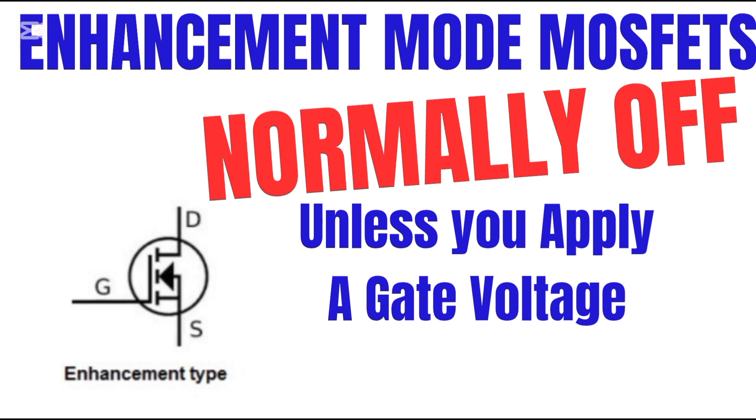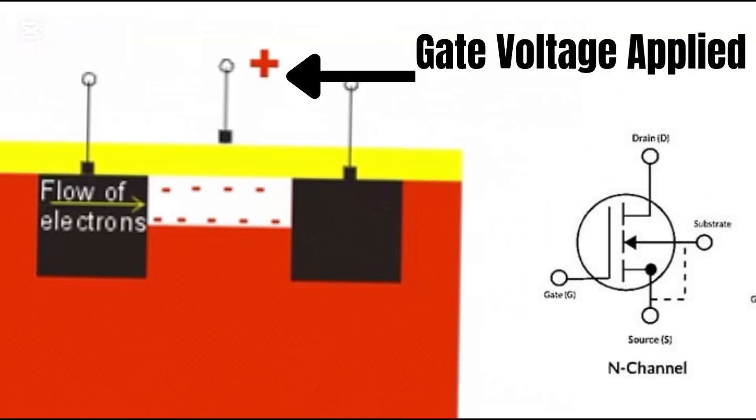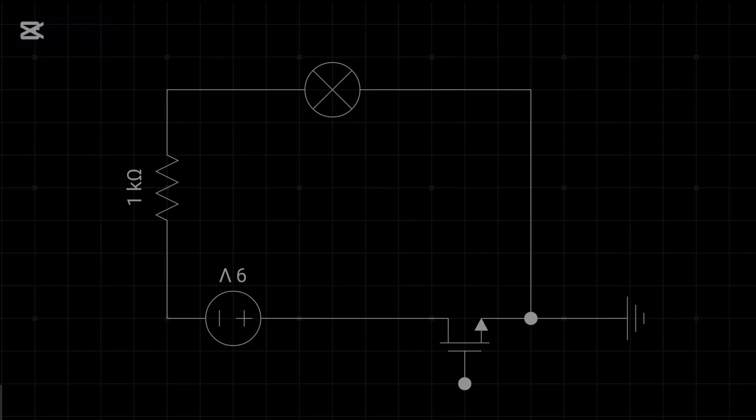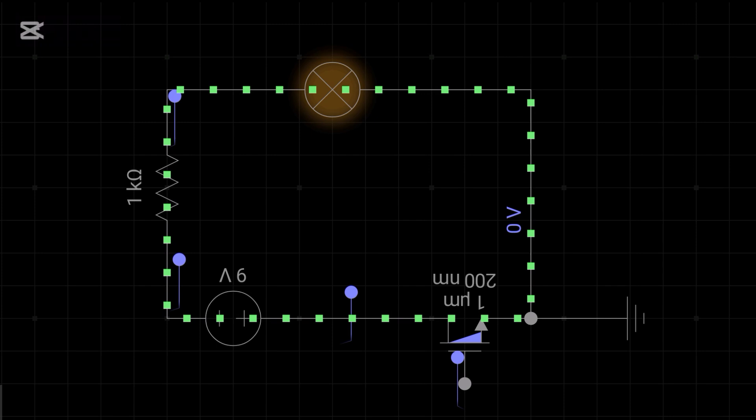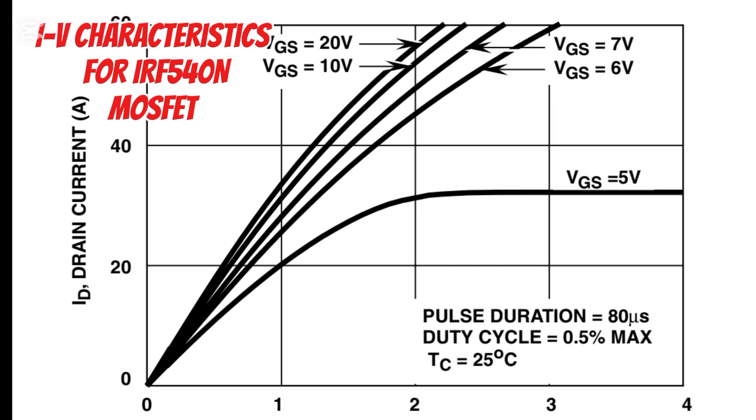An enhancement mode MOSFET is normally off, that means without any gate voltage it does nothing. But a depletion mode MOSFET is normally on. It conducts current even when no voltage is applied to the gate. Let's start with the IV characteristics of enhancement mode MOSFET.